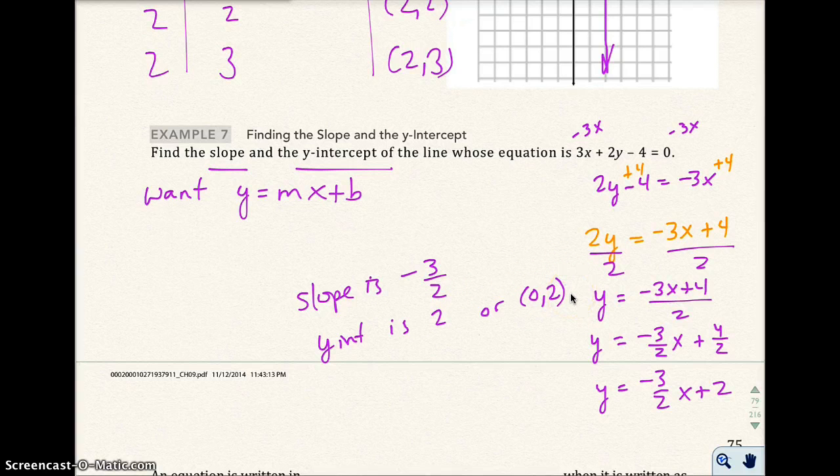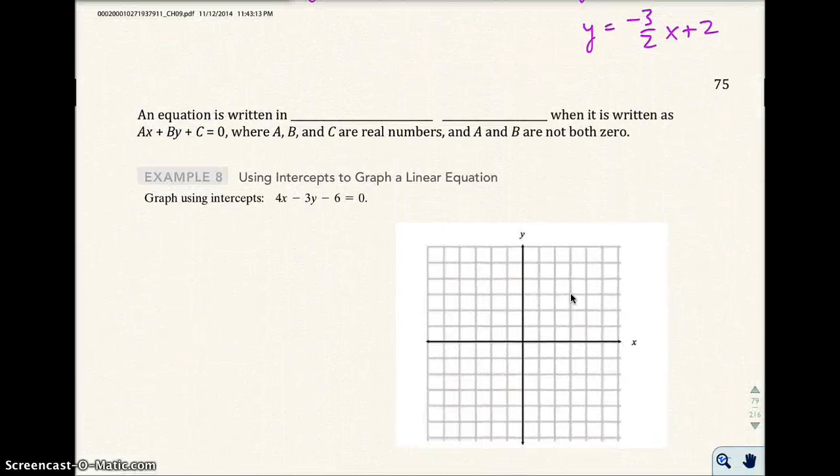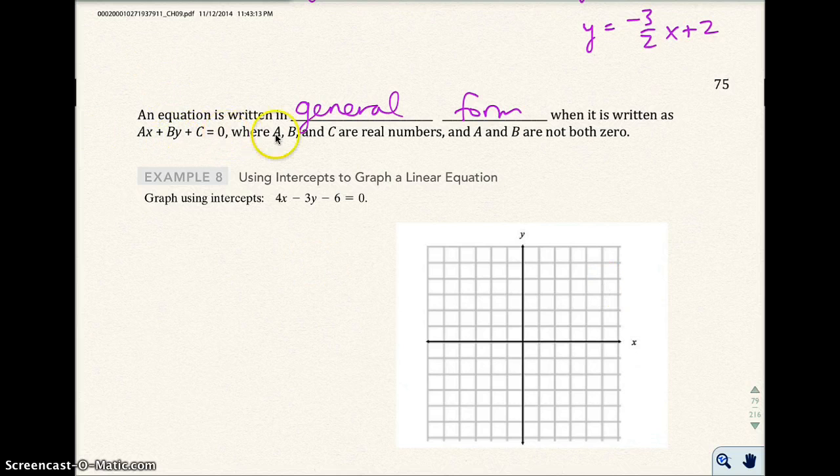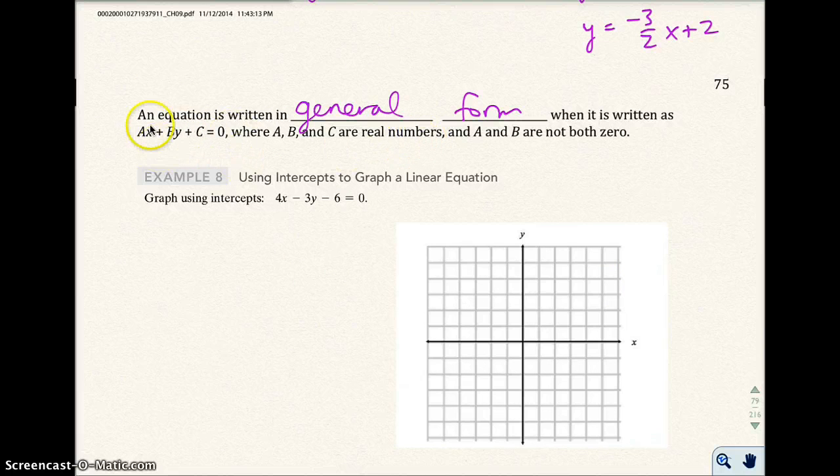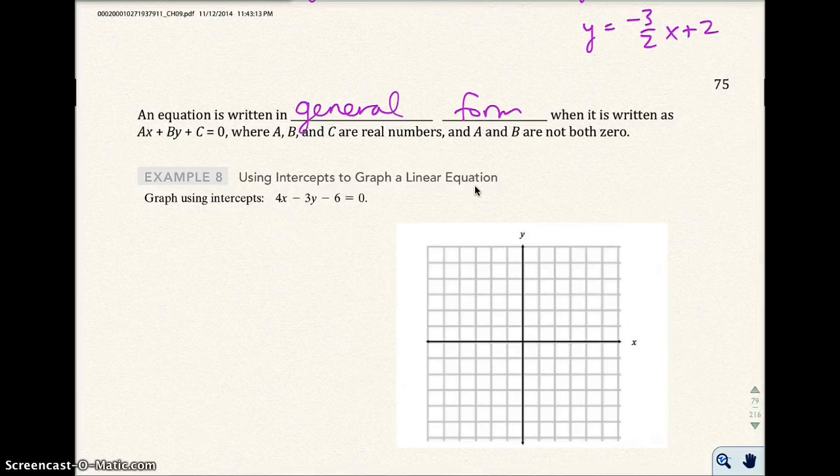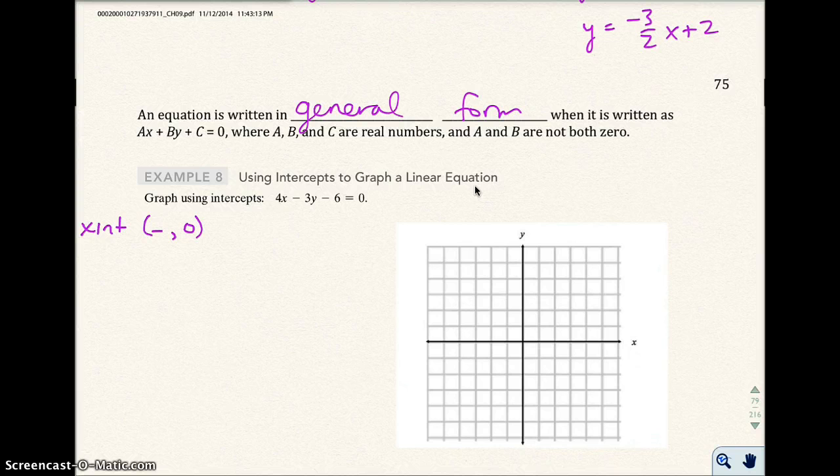Let's go to the next example. And let's talk about what a general form of equation is. An equation is written in general form when it is written as ax plus by plus c equals 0, where A, B, and C are real numbers, and A and B are not both zero. Well, that means that basically all your stuff is on one side and you have 0 on the other side. Use intercepts to graph a linear equation. Remember that we talked about this at the beginning of this chapter. Remember, all x-intercepts have 0 as a y-value. And all y-intercepts have 0 as an x-value.